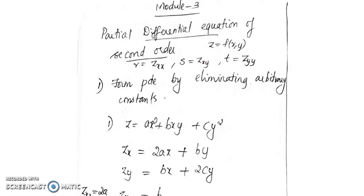If you have one arbitrary function, that will give a first order PDE. If you have more than one arbitrary function, that will give you a higher order PDE. In today's class we will look at how to form the PDE when you have arbitrary constants and arbitrary functions involved.